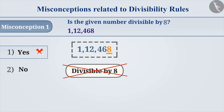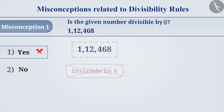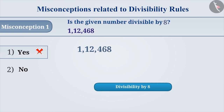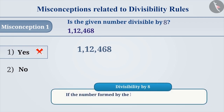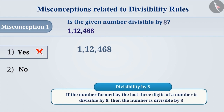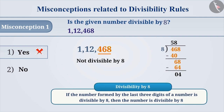The correct understanding is that there are different rules for divisibility by numbers. The rule of divisibility by 8 is: if the number formed by the last three digits of a number is divisible by 8, then the number is divisible by 8. The number formed by the last three digits of the given number is 468. By dividing this number by 8, we get the quotient 58 and the remainder 4. So, the number 468 is not divisible by 8. Therefore, the given number is also not divisible by 8.